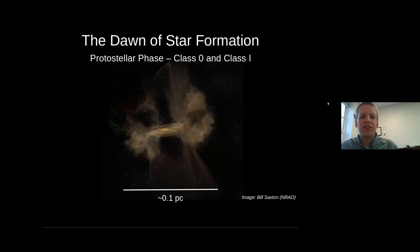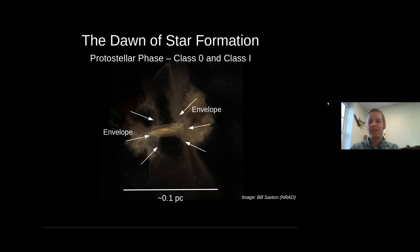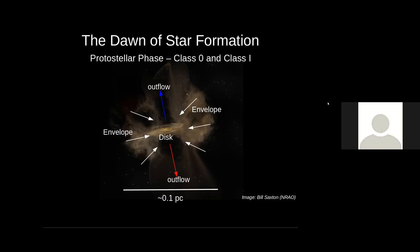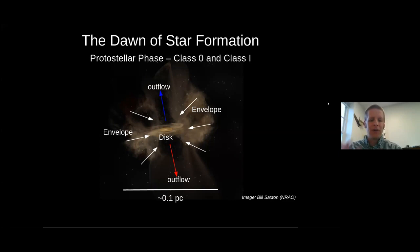Just to orient everyone, this is a diagram of what we think a class zero protostar system might look like: an infalling envelope, the cloud of gas that's collapsing under its own gravity. It conserves angular momentum and forms a disk, and then this can start driving outflow. A system like this may not be all that different, at least conceptually, from something like an AGN. You have accretion, you have disks, you have outflows — it's just that the energy scales are much different.